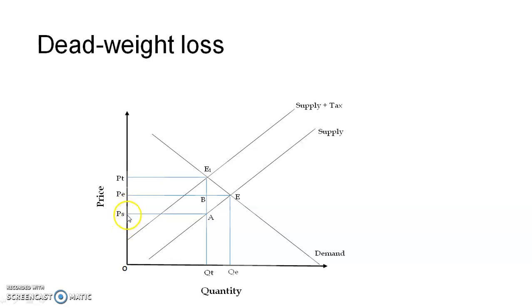That is nothing but PS, PT into OQT. That will give the tax revenue. So this portion, PS, A, E1, PT, is called the government revenue generated through the imposition of tax.